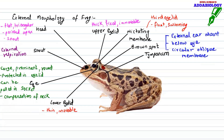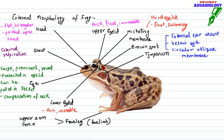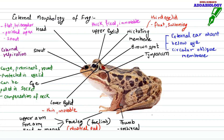Next are the legs. The forelimb — also called foreleg — is meant for support. Frogs have a stronger hind limb than the forelimb. The forelimb includes the upper arm, forearm, and hand or manus. It consists of a nuptial pad whose role is to grip and hold the female during mating. The thumb present in the foreleg is vestigial in the frog.